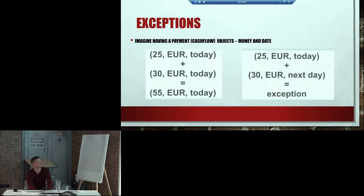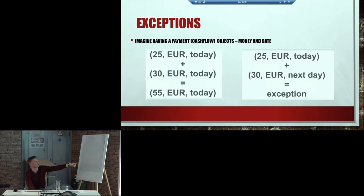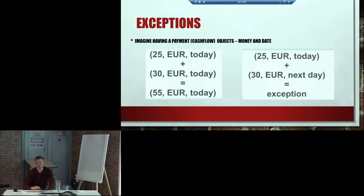So for example, imagine we have a payment cash flow object — money, and a date, and the date should be the same. You have a particular currency, you have a date, you have a value, and you combine them and you get this. If the right-hand example throws an exception, this is not something we can expect in monoids.